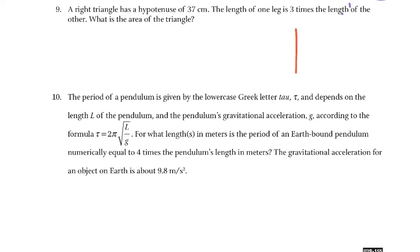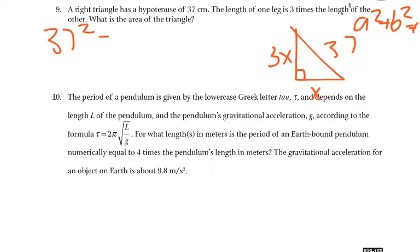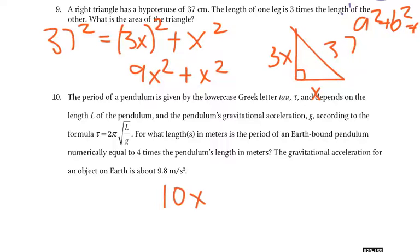Now, 9. A right triangle has a hypotenuse of 37 centimeters. The length of one leg is 3 times the length of the other. What is the area of the triangle? So 3 would be 3 times x, and we have x. So we set up our, you know, it's a right triangle. So a squared plus b squared equals c squared. So I have 37 squared equals 3x squared plus x squared.